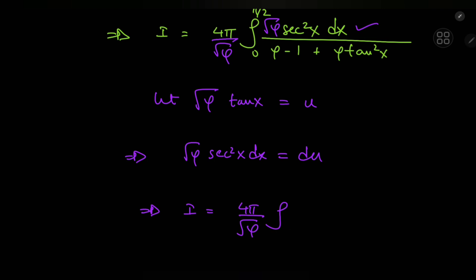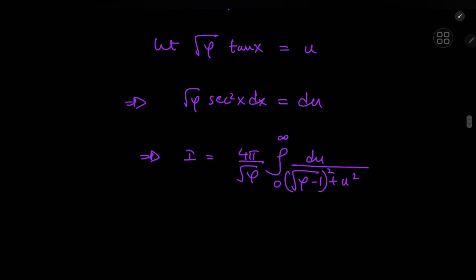And this implies that i can be written as 4π divided by √φ times the integral from, well, as x approaches 0, u will approach 0 as well. And as x approaches π by 2, you get an upper limit of infinity. And we're left with du divided by φ minus 1 plus u squared. And φ minus 1, of course, can be written as √(φ - 1) squared. So you have a nice inverse tangent structure now. So you have 4π divided by √φ times √(φ - 1). And we're left with the inverse tangent of u divided by √(φ - 1), with the limits being 0 and infinity.